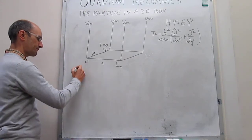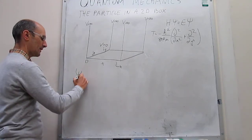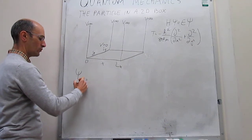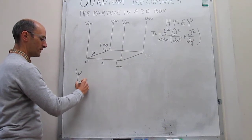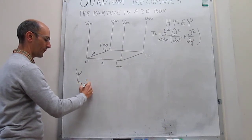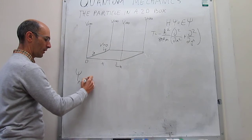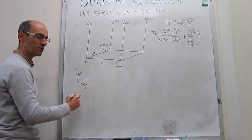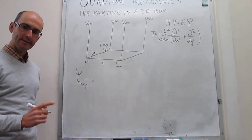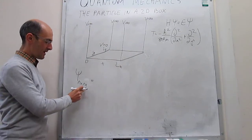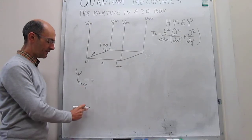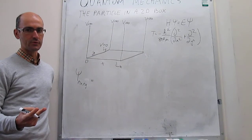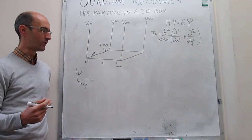The wave function is now going to depend on two quantum numbers, and this is something very important. Going from motion in one dimension to motion in two dimensions, the first modification is that the wave function and the energy are now going to depend on two quantum numbers, not only one.